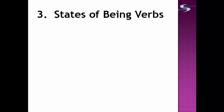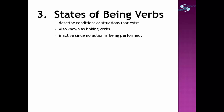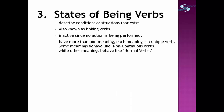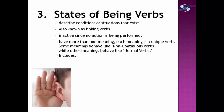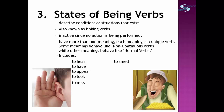The third group is states of being verbs. These describe conditions or situations that exist and are also known as linking verbs. These are inactive since no action is being performed. These verbs have more than one meaning — some meanings behave like non-continuous verbs while others behave like normal verbs. This group includes: to hear, to have, to appear, to look, to miss, to smell, to see, to taste, to think, to weigh, and is/being.